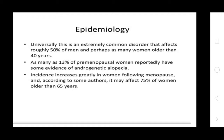Epidemiology of Alopecia. This is an extremely common disorder that affects roughly 50% of men and perhaps as many women older than 14 years. As many as 13% of pre-menopausal women reportedly have some evidence of androgenic alopecia. Incidence increases greatly in women following menopause and may affect 75% of women older than 65 years.